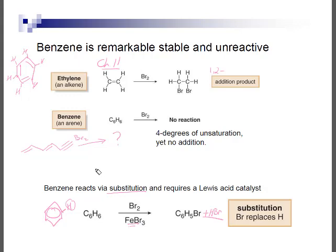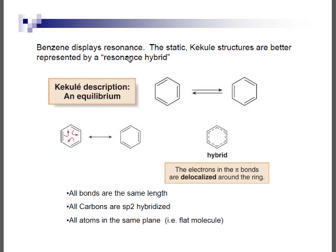Benzene and other aromatic compounds are not classified as alkenes, primarily because they do not behave like alkenes. All the carbons in benzene are sp2 hybridized, all the bonds are the same length, and the molecule is flat and planar. The structure with static double bonds is referred to as a Kekulé structure. Personally, I prefer the resonance hybrid structure, where we use the circle in the middle to indicate the delocalized pi electrons.